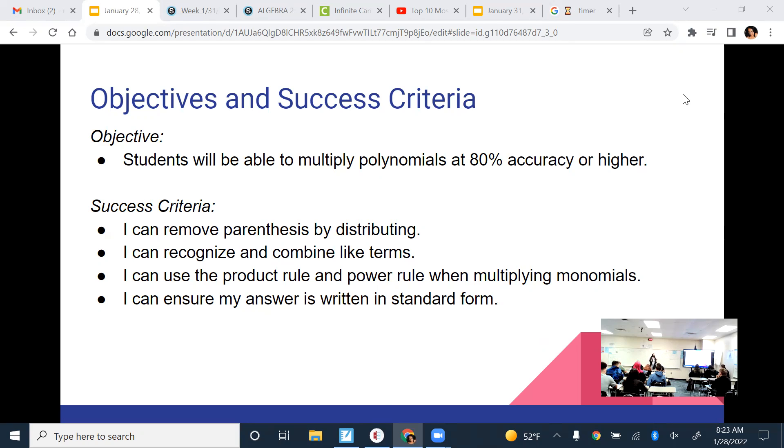Make sure that we're multiplying that monomial by every single term. So what you'll be tested on by the end of class today with your exit ticket is: can you remove parentheses by distributing, can you combine like terms, can you use the product rule, and can you make sure that your answer is written in standard form? The top two things I'm hoping you've gotten good at since we've been doing that all year. It's the product rule and standard form that should be a little new.